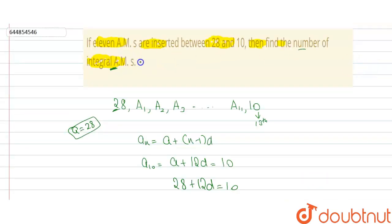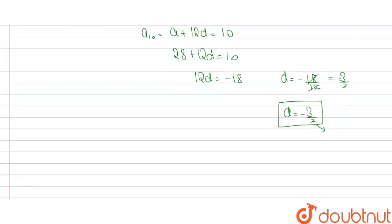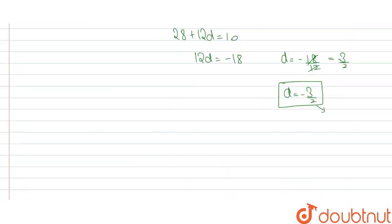Now, to find the number of integral arithmetic means: the arithmetic means will be integral when there's no denominator, which means 2 has to cancel out. We can take only even values, so even values will be 2, 4, 6, 8, 10.